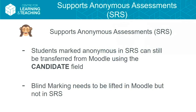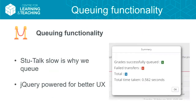Students marked anonymous in the record system use a candidate field behind the scenes to map it internally. We don't support blind marking in Moodle as yet — blind marking needs to be lifted in Moodle first so that we can send it through to the student record system. The queuing functionality exists because StuTalk is really slow — we do four or five web service calls and to transfer a single grade takes about nine seconds, which we thought was not acceptable.